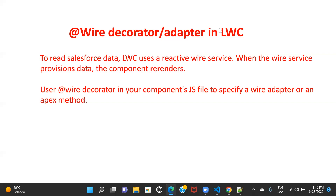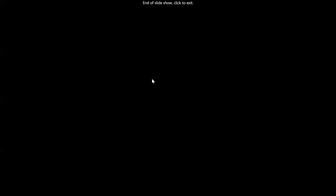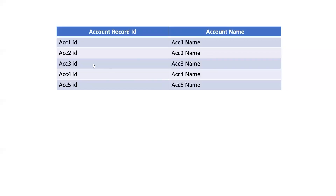Before we start, let me show you what we want to achieve. I want to display on my Lightning Web Component — I want to read data from Salesforce and display five accounts in a table, showing the account IDs and the account name. It's going to fetch random five accounts and display the account ID and account name from the account record.